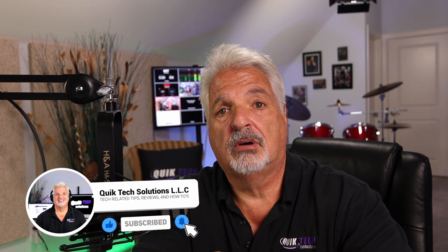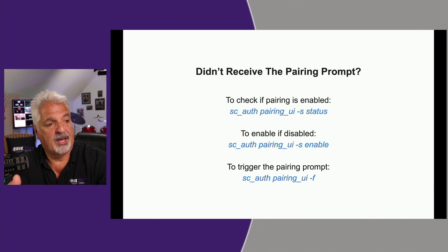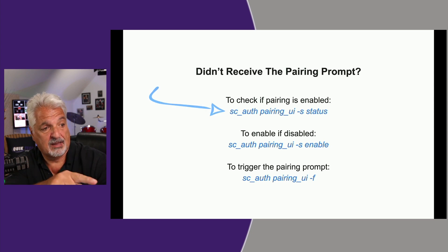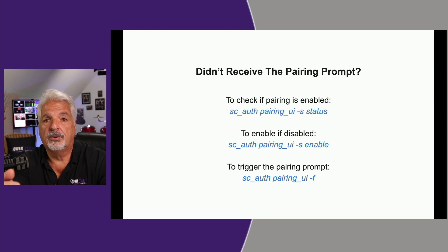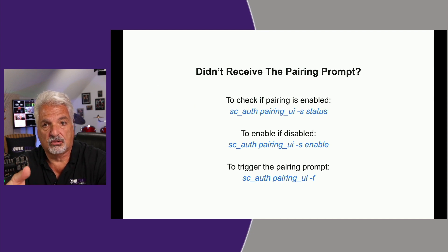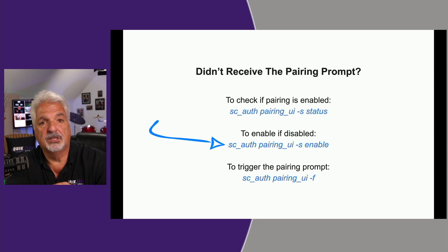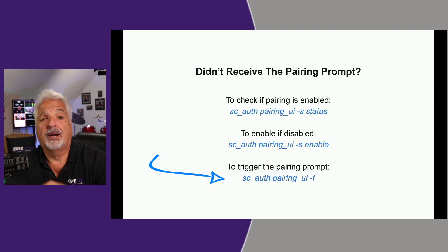The first thing you need to do in the terminal is check to see if the pairing is enabled by typing in that first command that I have here in blue. I'll put all these commands down in the video description, so not to worry. If it is actually disabled, go ahead and type in the second command you see in blue to enable it. And then once you have it enabled, go ahead and trigger the pairing prompt by typing in that third command in blue.